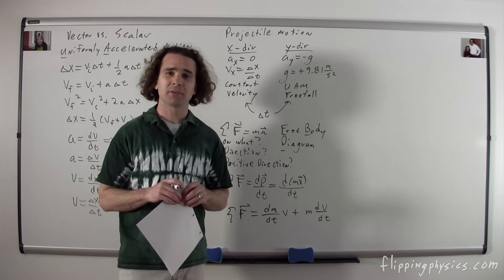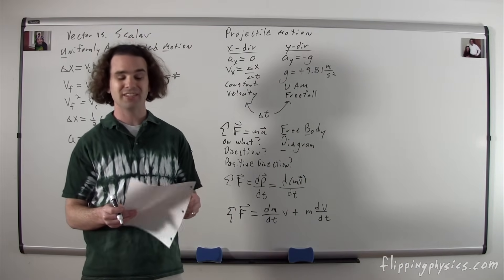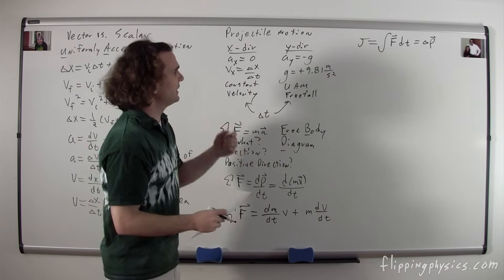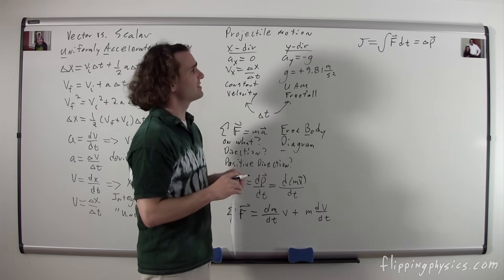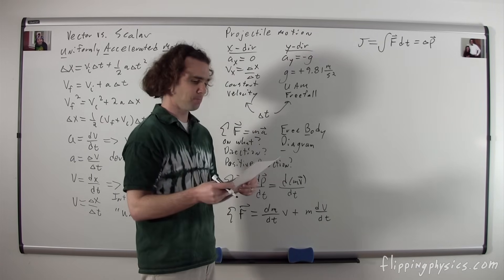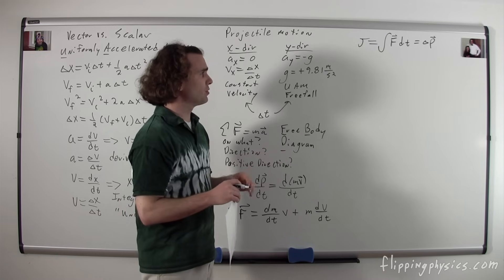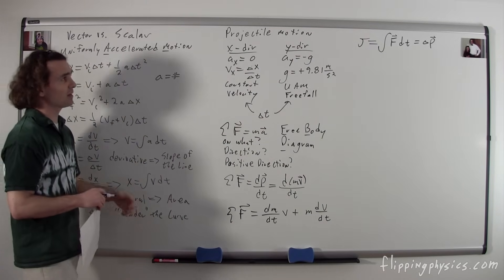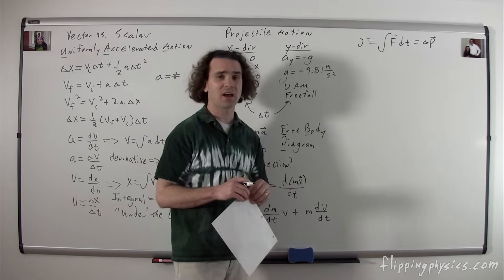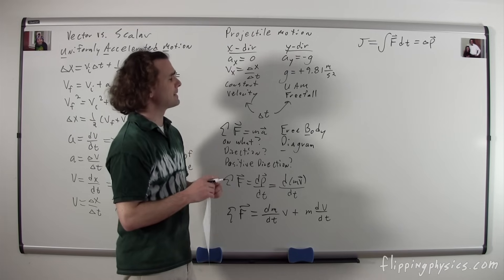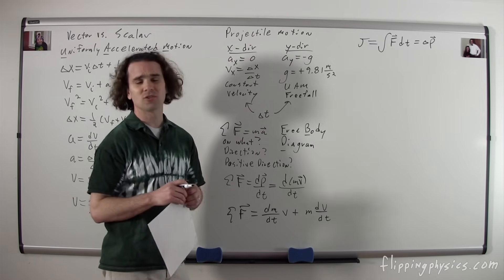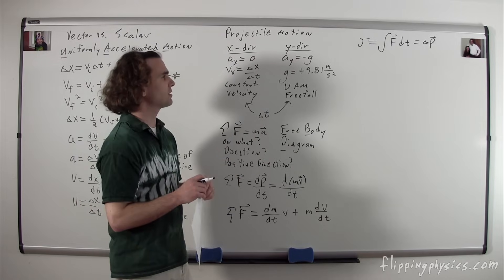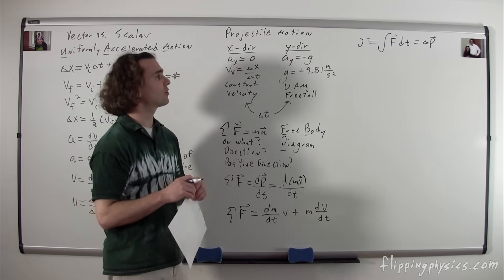The next basic concept is impulse. The symbol for impulse is a capital J. Impulse is the integral of force with respect to time, and it's also equal to the change in momentum. The impulse is the area underneath the force-vs-time curve. It's not unusual to see a multiple choice question that gives you a graph and asks you to find the impulse, change in velocity, or similar — you just need to find the area under the curve.